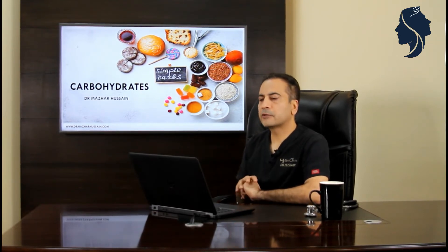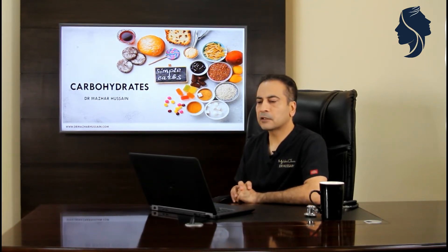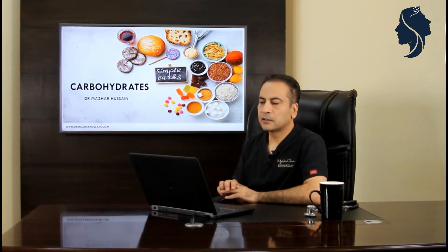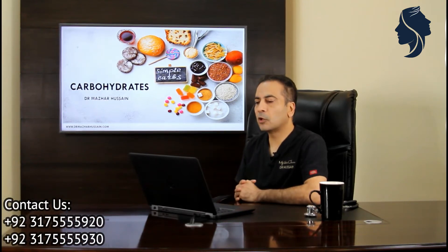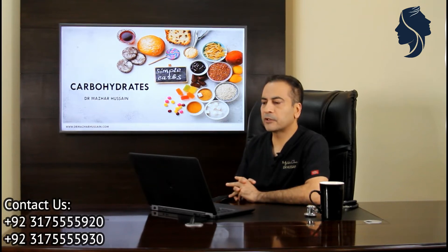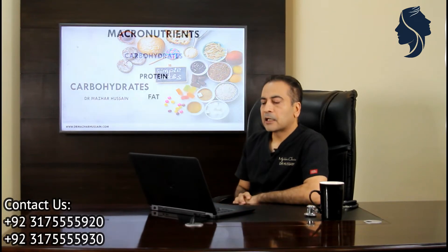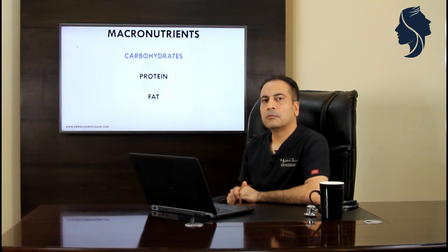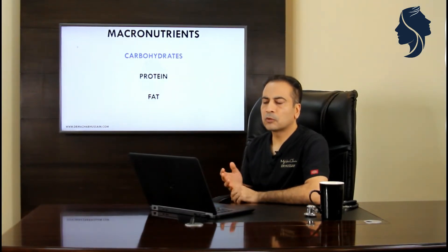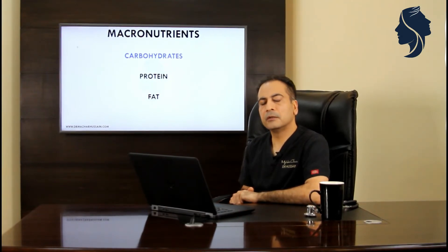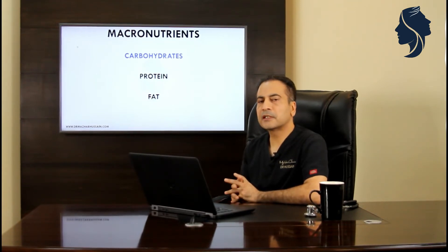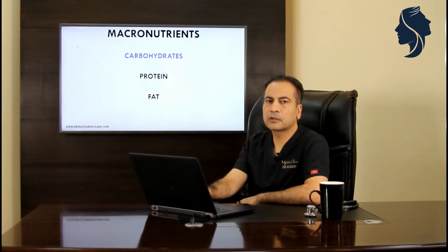Today we're talking about carbohydrates. You can see from the picture it's quite a wide variety of things — cakes, bread, pasta, and sugars of course. Drinks, juices, and so on. Fruits also contain a lot of carbohydrates. Carbohydrates are one among our three major macronutrients — carbohydrates, proteins, and fats — and right now we're going to talk about carbohydrates.